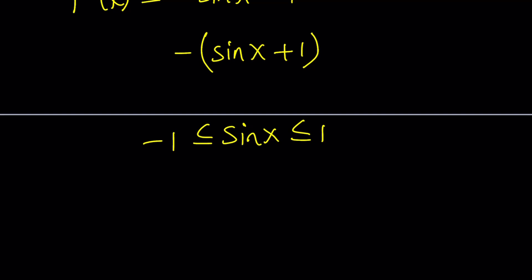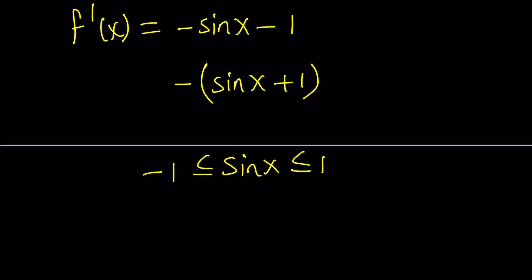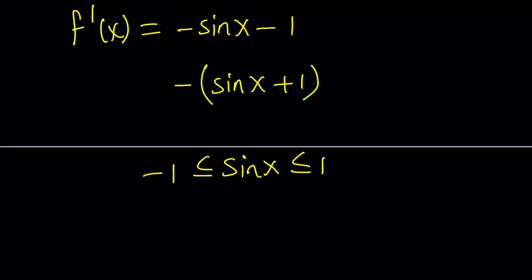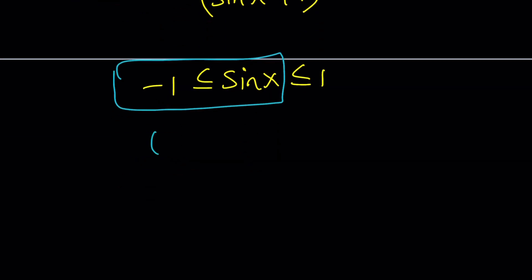So sine x is always between negative 1 and 1 inclusive as long as x is real. If x is not real, sine x can be 2. We've done some problems using complex numbers, so on and so forth. That's a different story. But if x is real, this is the deal. Notice that sine x is greater than or equal to negative 1. I don't care about the positive 1 here. So if you add 1 to both sides of this inequality, you get the following. That gives you sine x plus 1 is always greater than or equal to 0.